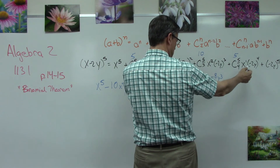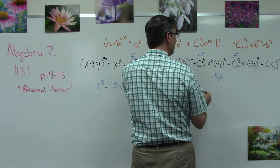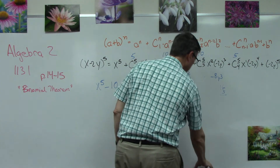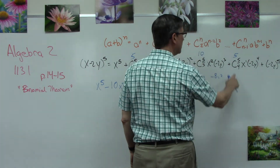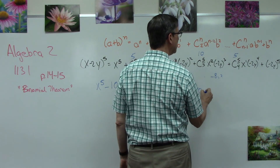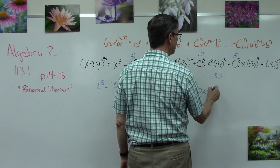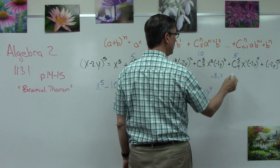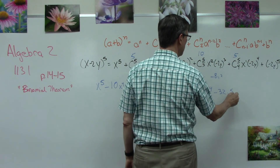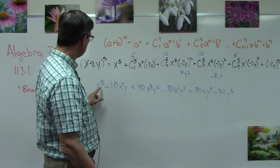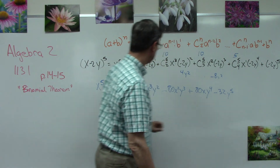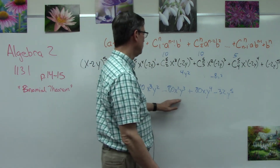Continuing: negative 2y to the third is negative 8y cubed, times 10 gives minus 80x squared y cubed. Then 2 to the fourth is 16, times 5 is 80, giving plus 80x y to the fourth. And the last term is minus 32y to the fifth. Looking back: x exponents go 5, 4, 3, 2, 1, zero — decreasing. Y exponents go 1, 2, 3, 4, 5 — increasing. Coefficients are 1, negative 10, 40, negative 80, 80, negative 32.